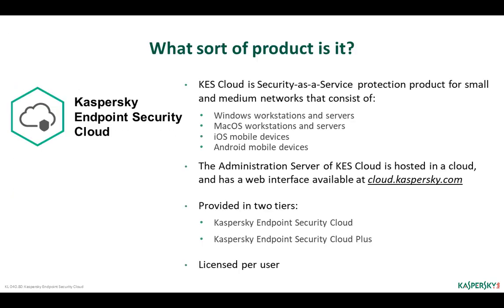Kaspersky Endpoint Security Cloud is a security-as-a-service protection product for small and medium networks. KESS Cloud uses Kaspersky Endpoint Security for Business (KSB) protection products but with a limited set of components: Kaspersky Endpoint Security for Windows, Kaspersky Endpoint Security for Mac, iOS mobile device management profile, and Kaspersky Endpoint Security for Mobile (Android). KESS Cloud is an administration system hosted in the cloud with a web interface, referred to as the Kaspersky Endpoint Security Cloud console.